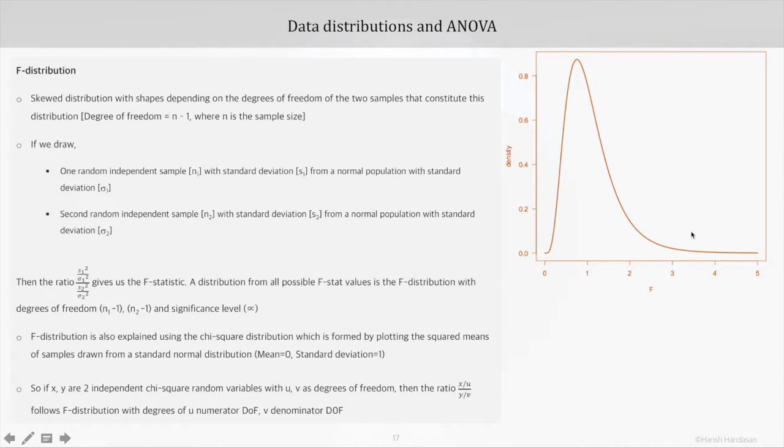Now what is this chi-square distribution? It's very simple. It is a result of plotting the squared means of samples drawn from a standard normal distribution. What is standard normal distribution? It is a normal distribution with mean 0 and standard deviation 1. So from this standard normal distribution, if you draw samples, take means, and plot the means, the resulting distribution is going to be a chi-square distribution.